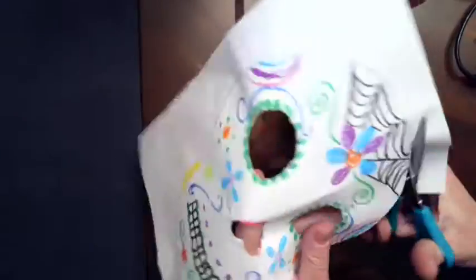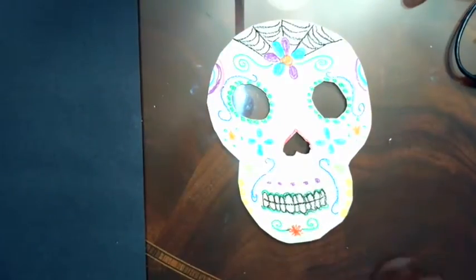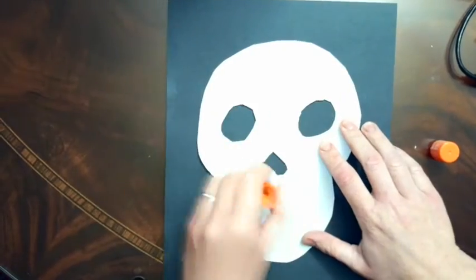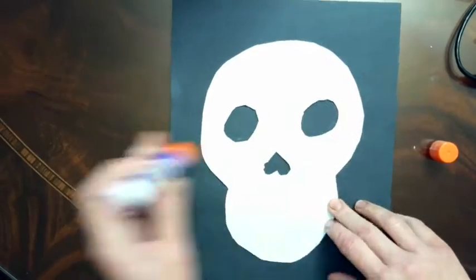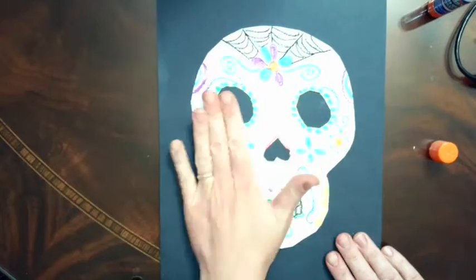Now cut out your entire skull and glue it onto the black piece of paper. You don't have to cut out the eyes and nose. That can be a little tricky. If you want, you can leave those there and just color them in black so that they still look like they've been cut out.